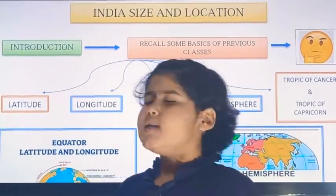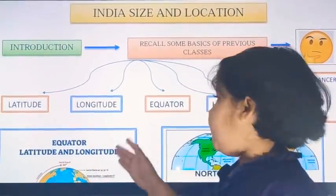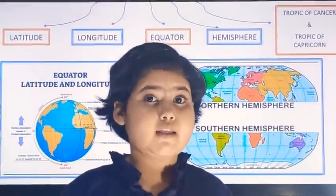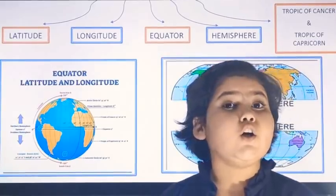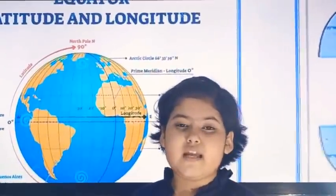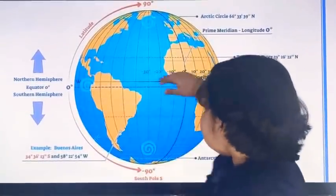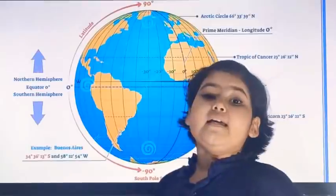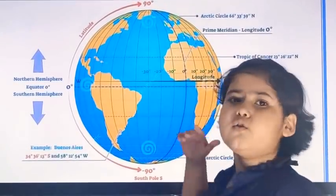Let's understand some basics. Today we will study about the equator by its definition. The equator is an imaginary line that divides the Earth into 2 equal halves. As shown in the image, the equator is dividing the Earth into 2 equal halves, and the equator is at 0 degrees.